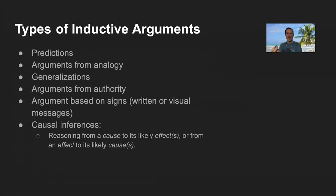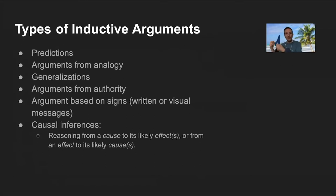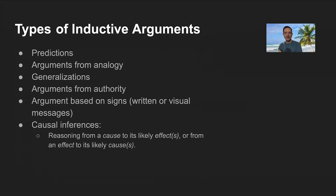Generalizations reason from particular examples to a general principle. For example: observing five cars all have four wheels, then concluding 'therefore all cars have four wheels.' The vast majority of cars may have four wheels, but that doesn't prove with absolute necessity that all cars must. Any reasoning from particular examples to a general conclusion is inductive by definition — it deals with probabilistic reasoning no matter how much particular evidence you gather.